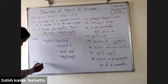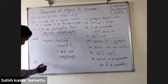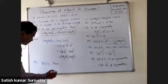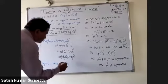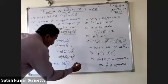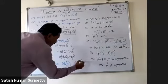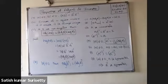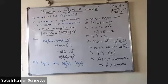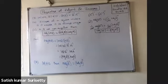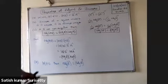If A is non-singular, then adjoint of A transpose equals adjoint of A whole transpose. That is, if determinant of A is not equal to zero, then adjoint of A transpose equals adjoint of A whole transpose. Remember that adjoint of A transpose is the same as adjoint of A whole transpose.